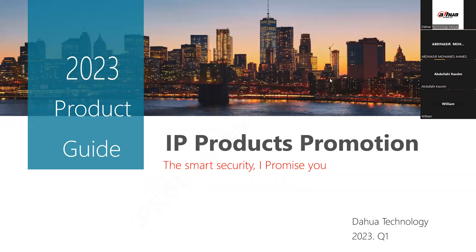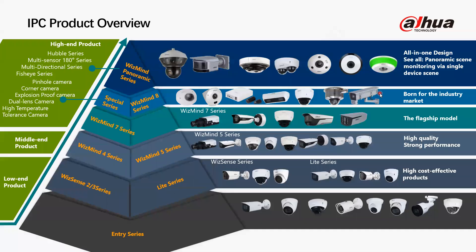Today we're going to take a look at the IP products promotion based on the different IPC families. We'll start with the IPC overview based on the products and the triangle that distributes them by different categories and functionalities — specifically in terms of power, performance, and AI capabilities.